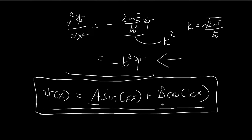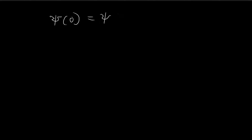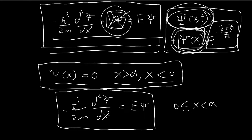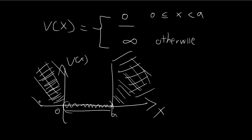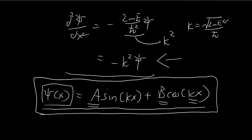We now need to find the constants A, B, and k. Since we don't yet know E, we don't know k. To find these constants we use the boundary conditions ξ(0) = 0 and ξ(a) = 0, which follow from the continuity of ξ(x): since ξ(x) = 0 outside the well, it must equal 0 at both endpoints x = 0 and x = a to remain continuous.